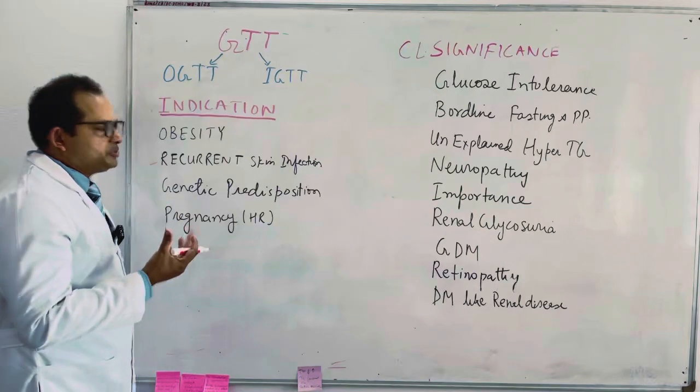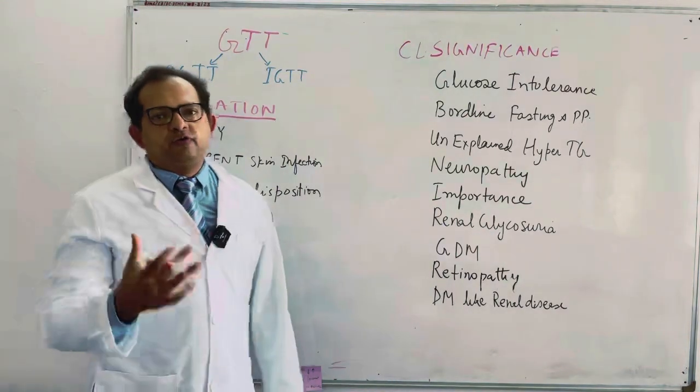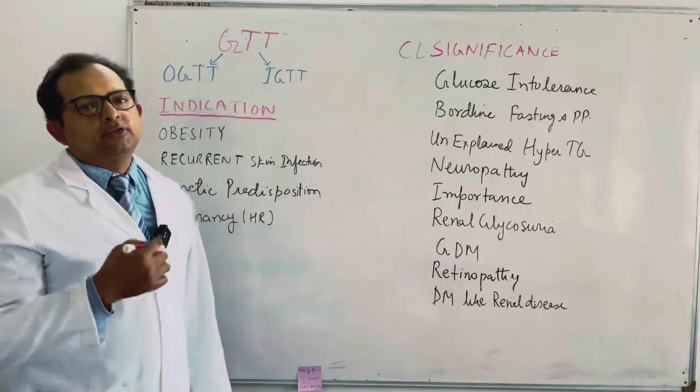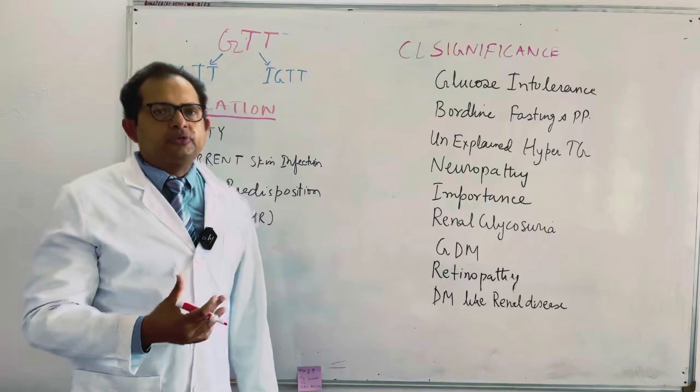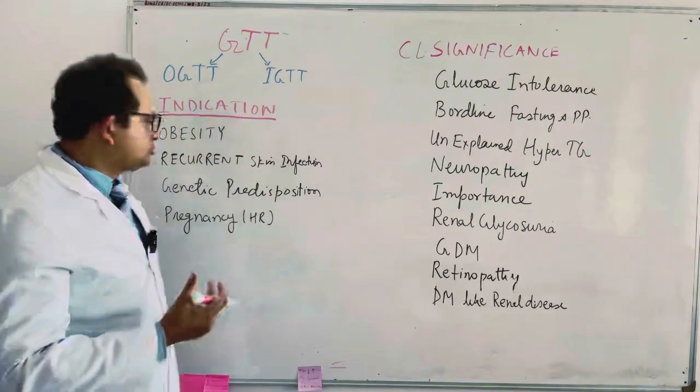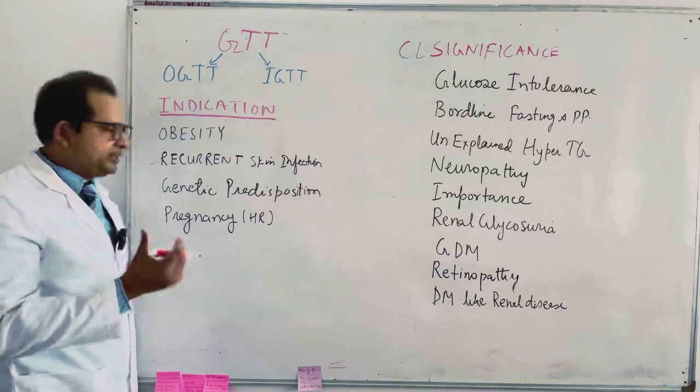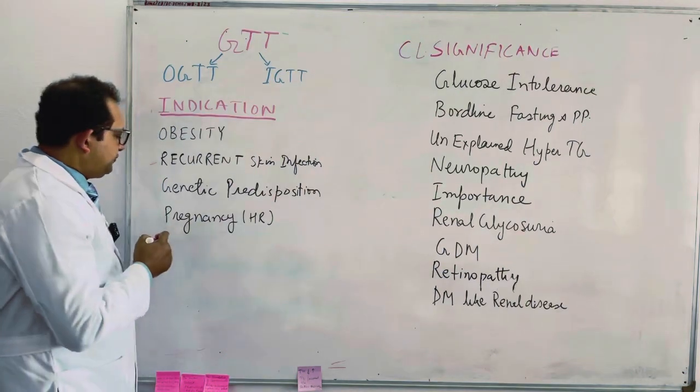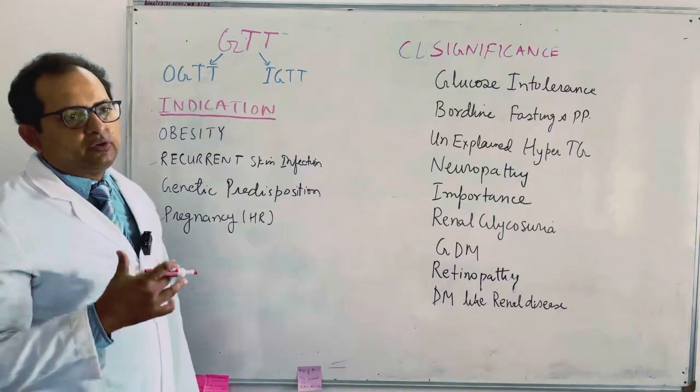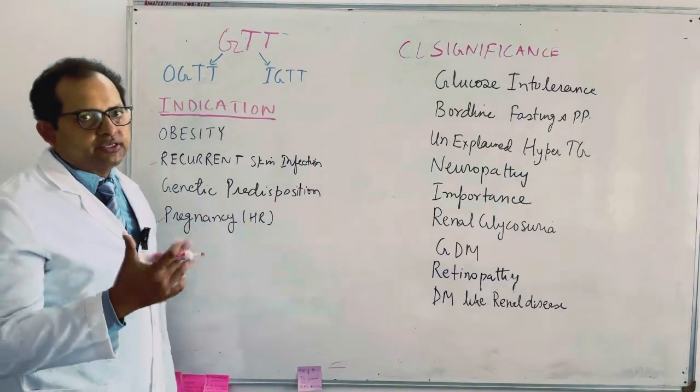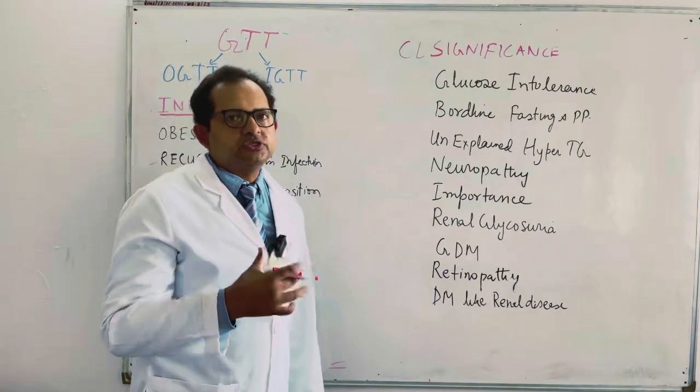The third is genetic predisposition. If someone's father, mother, or forefathers are diabetic and chronic diabetic, we will do GTT prophylactically to find out if they have diabetes. The fourth indication is pregnancy. In high risk pregnancy we also do the glucose tolerance test, and this is called gestational diabetes.